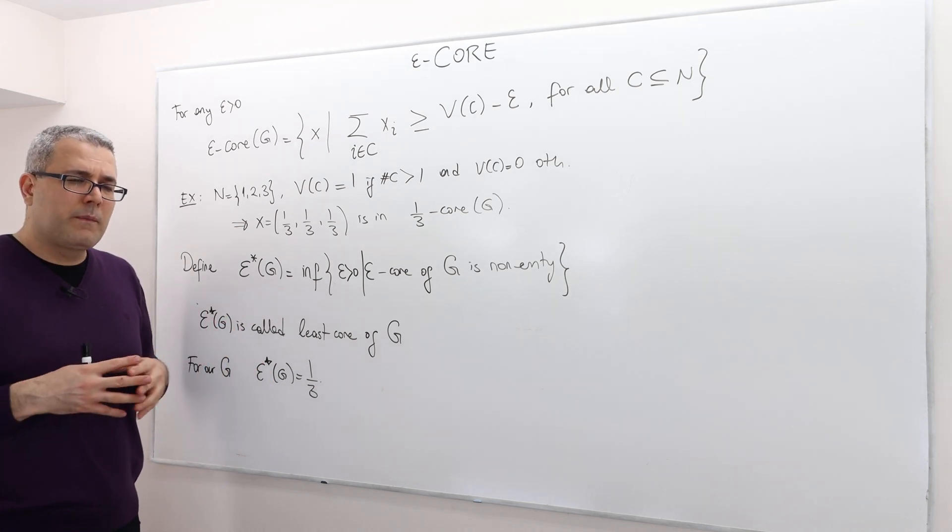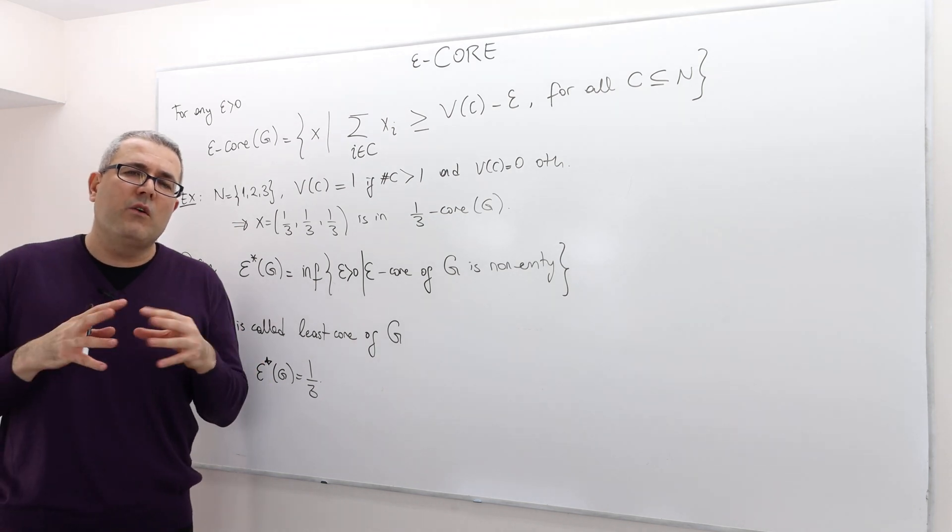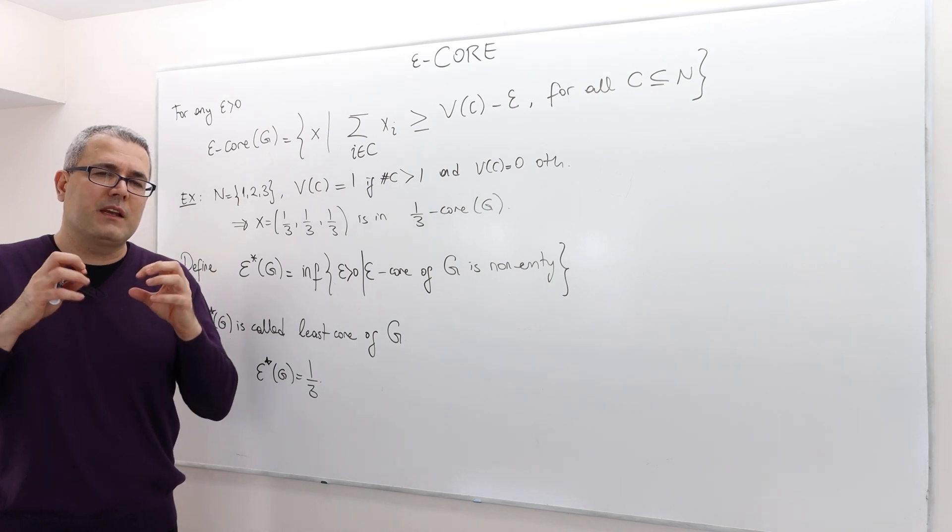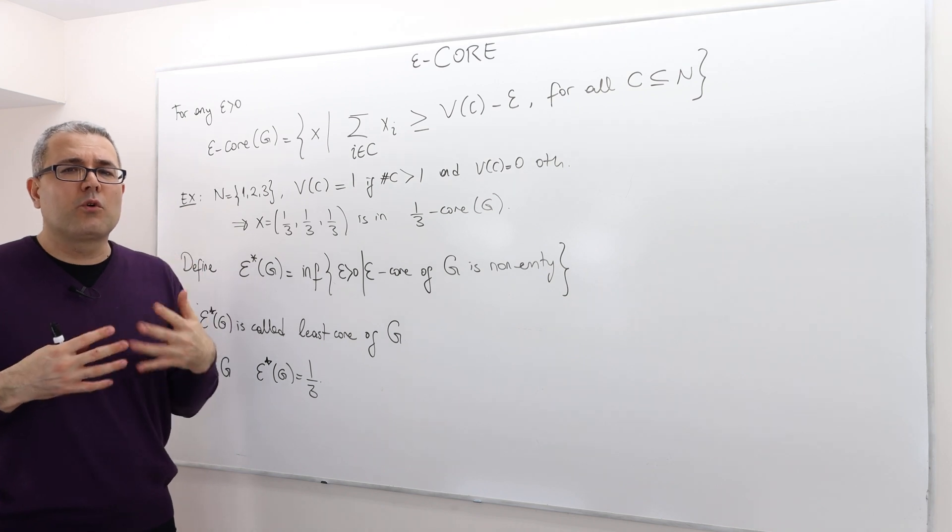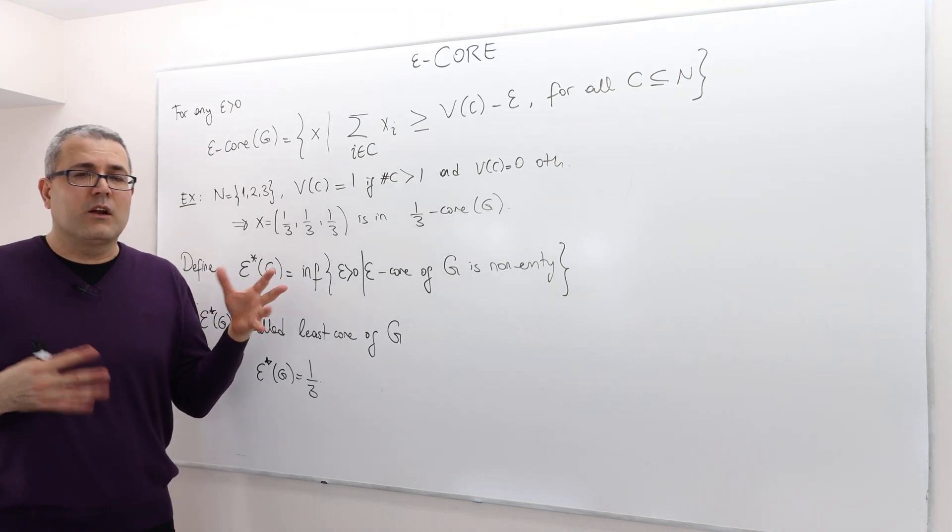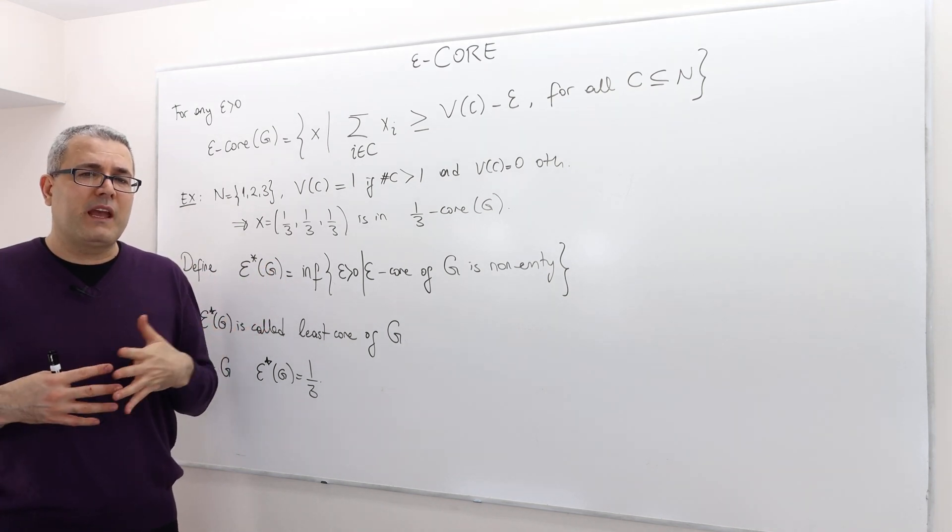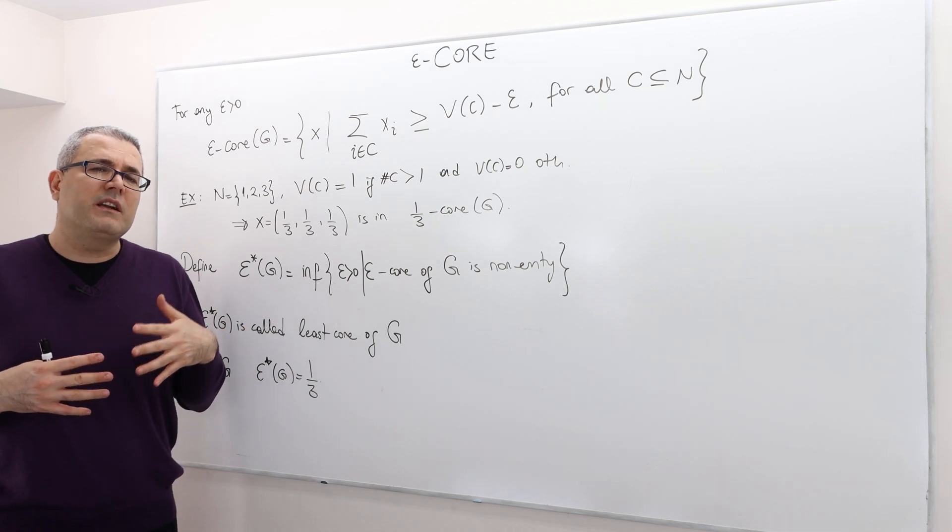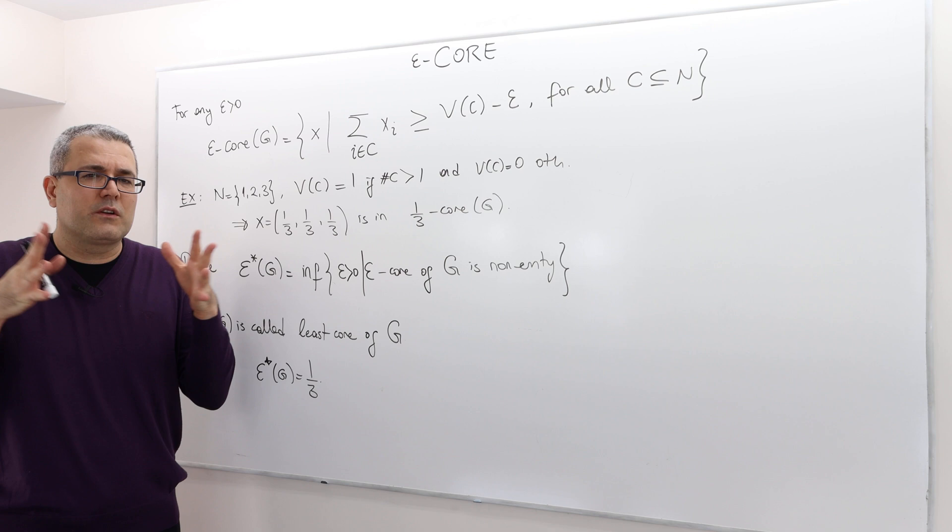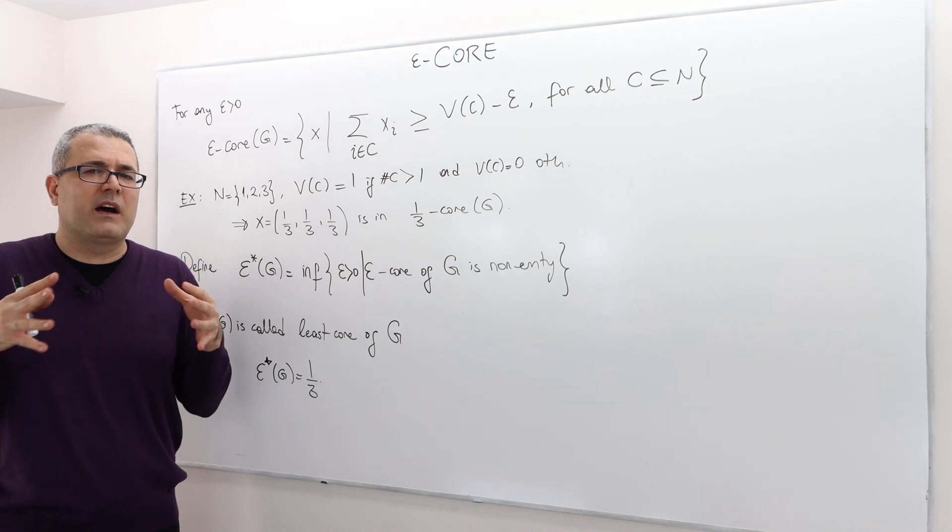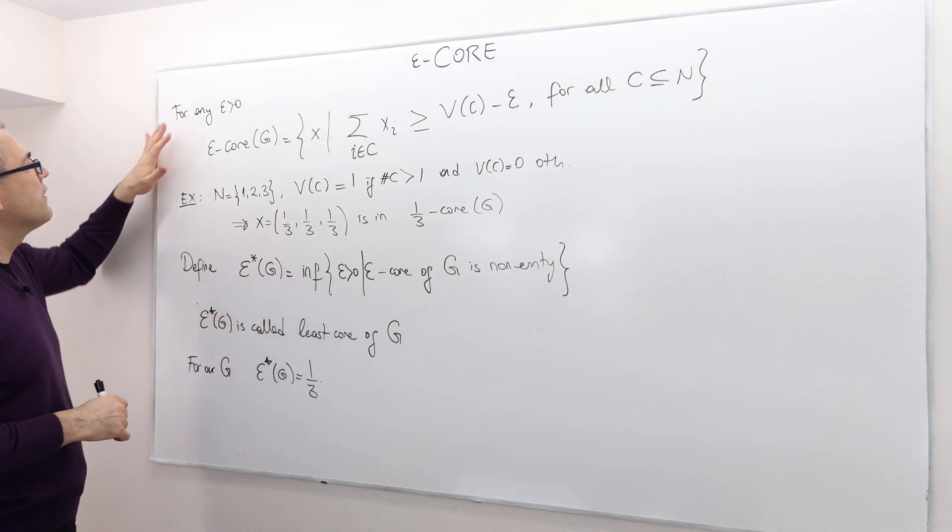Remember, the core says no coalition has incentive to deviate. The Epsilon Core says some coalitions may have incentive to deviate, but their incentive is not huge. So the incentive is bounded by some Epsilon.